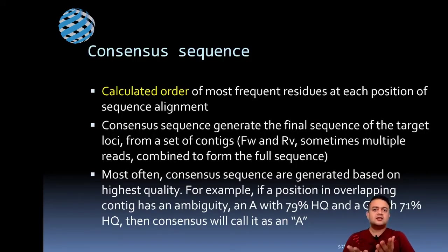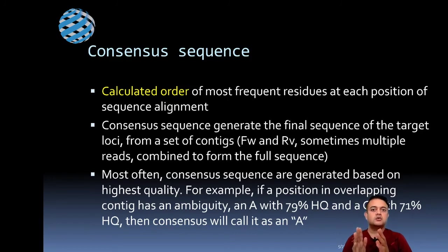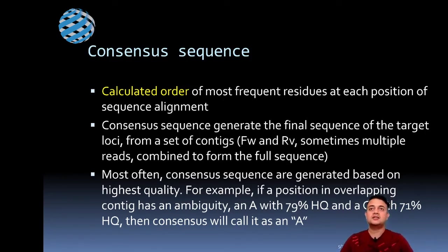Now, what is a consensus sequence? A consensus sequence is the calculated order of the most frequent residues at each position of the sequence alignment. Each position in the alignment has different bases — the most frequently found residue at each position is what makes up the consensus sequence. Consensus sequence generates the final sequence of the target locus from a set of contigs.